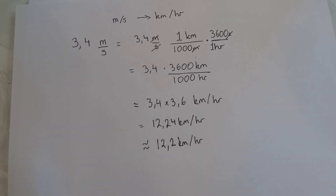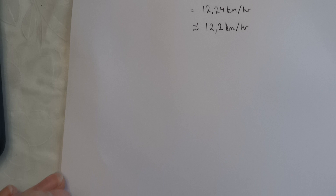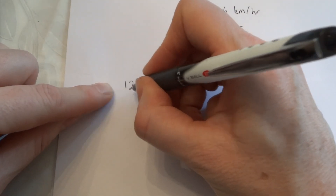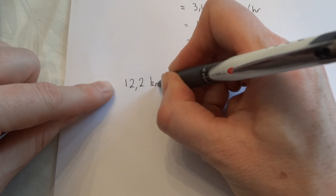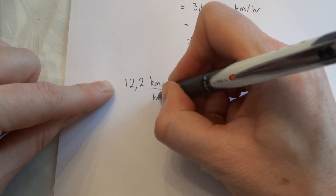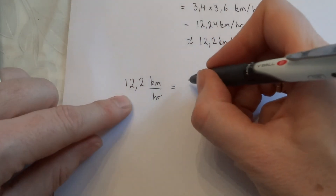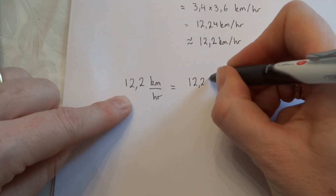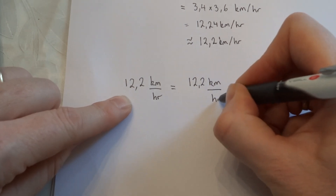What would we do if we were going the other way around? Well, if we had instead 12.2 kilometers per hour and we wanted to convert that to meters per second, then we'd start with 12.2 kilometers per hour.